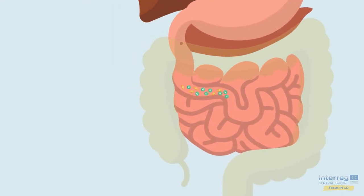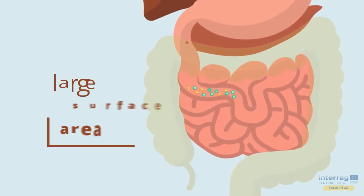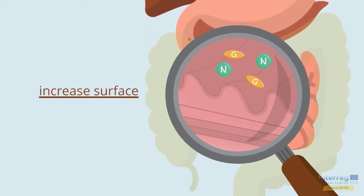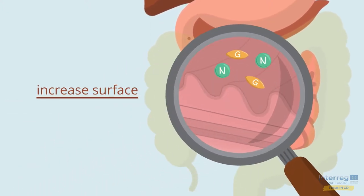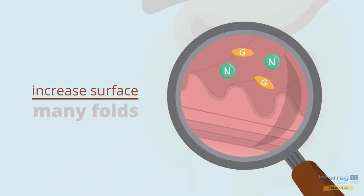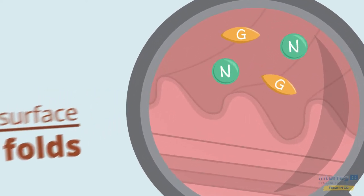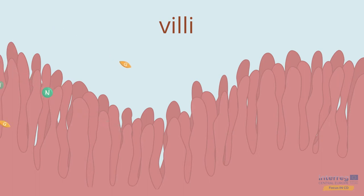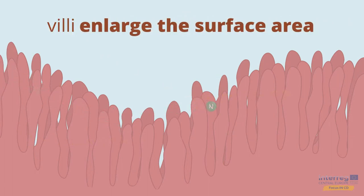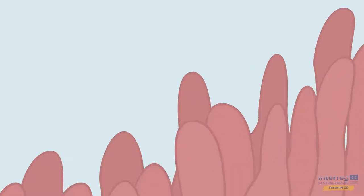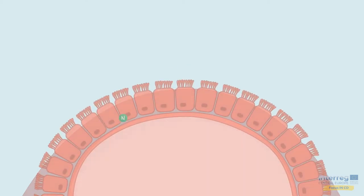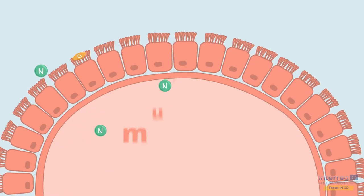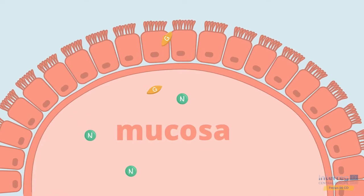To allow the small intestine to efficiently absorb nutrients, it needs a large surface area. To increase the surface area, the small intestine has many folds, which are covered with finger-like structures called villi. The villi substantially enlarge the surface area. Here, all digested nutrients, including gluten fragments, can be absorbed across the mucosa of the small intestine.